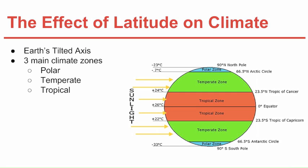The effect of latitude on climate: because of Earth's tilted axis, sunlight does not strike Earth the same in different places. There are three main zones. The polar zone, which is colder, gets the lowest angle of sun. Then there's the temperate zone, which ranges in temperature from hot to cold and is between the polar and tropical zones. The tropical zone is the hottest — it's near the equator and receives direct sunlight nearly year-round.